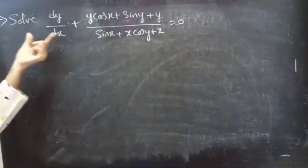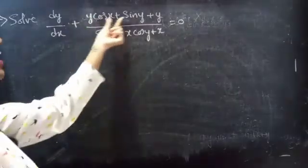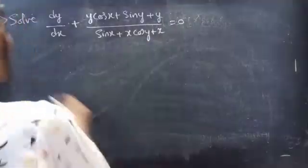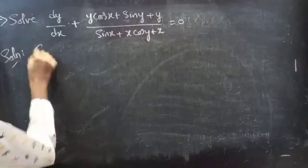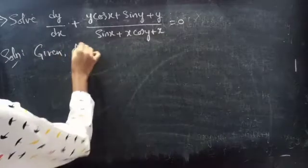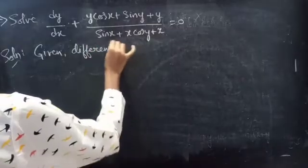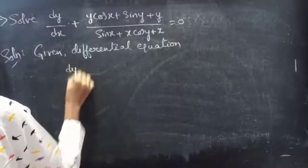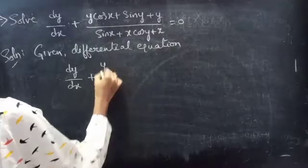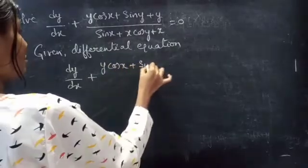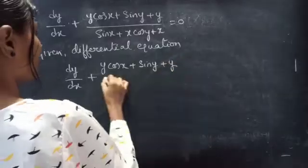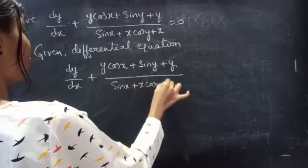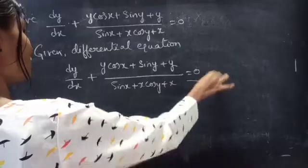Problem: solve dy/dx plus y·cos(x) plus sin(y) plus y, divided by sin(x) plus x·cos(y) plus x, equals zero. Consider it as equation 1.